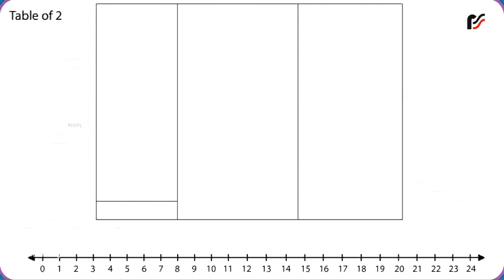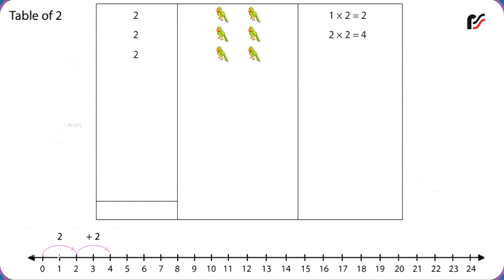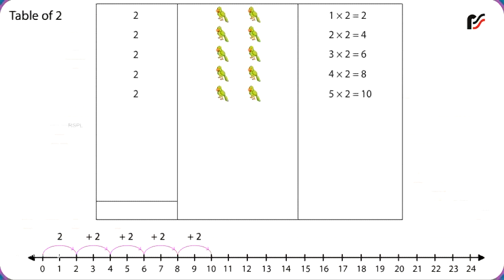Multiplication Table — Table of 2. 1 times 2 is equal to 2. 2 times 2 is equal to 4. 3 times 2 is equal to 6. 4 times 2 is equal to 8. 5 times 2 is equal to 10. 6 times 2 is equal to 12. 7 times 2 is equal to 14. 8 times 2...